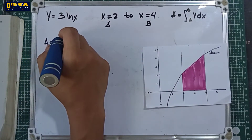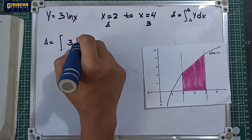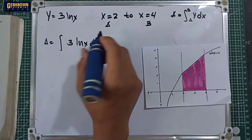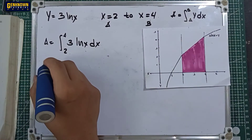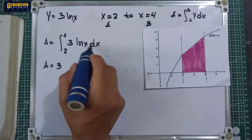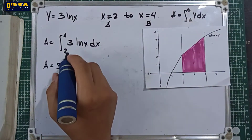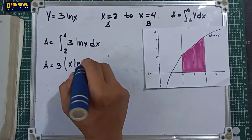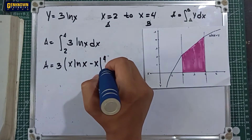The area is equal to the integral of 3 ln x dx with upper limit 4 and lower limit 2. Applying the integration result, we get 3 times [x ln x minus x] evaluated from 2 to 4.